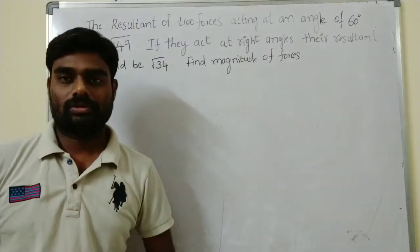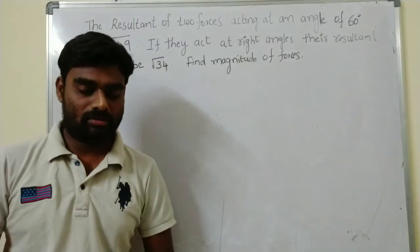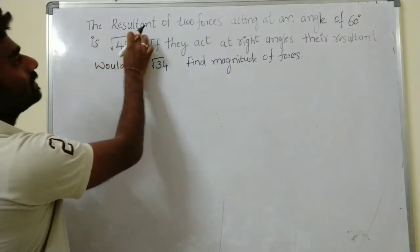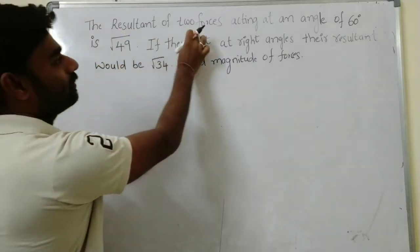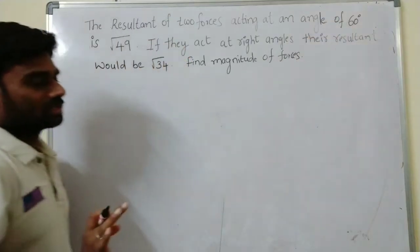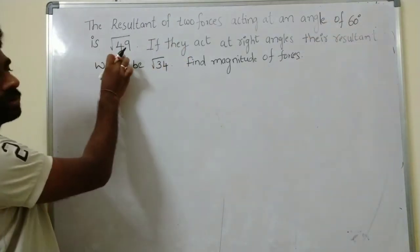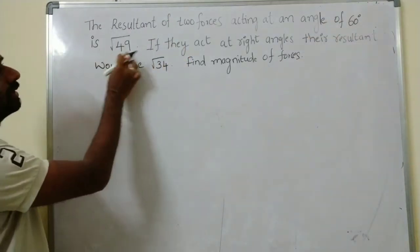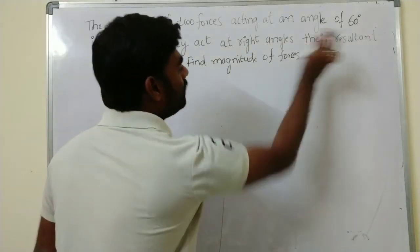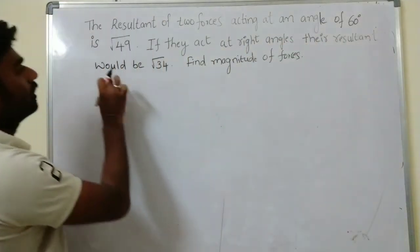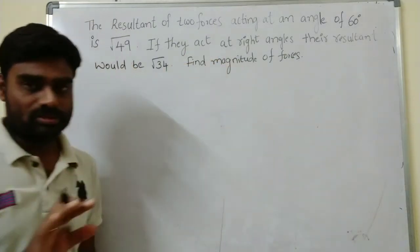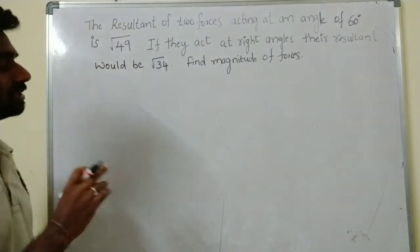This question is related to the parallelogram law of forces. The resultant of two forces acting at an angle of 60 degrees is √49. If they act at right angles, their resultant would be √34. Find the magnitude of the forces.